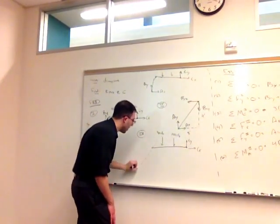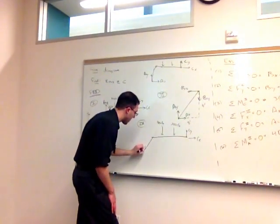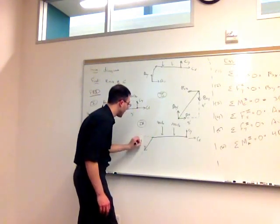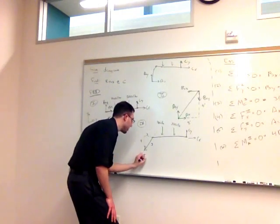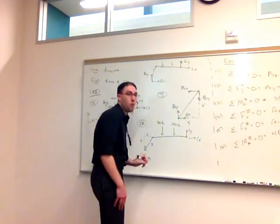So I'll assume that AB is in tension here. This is going to make a 3-4-5 triangle. And then I can say that this is the tension or the force in AB.